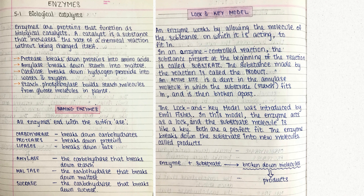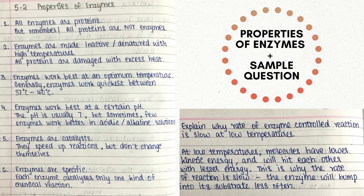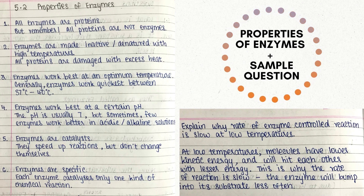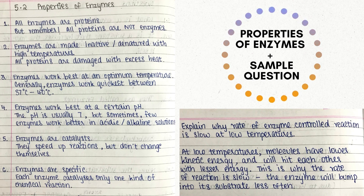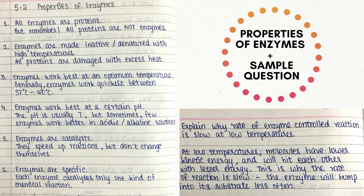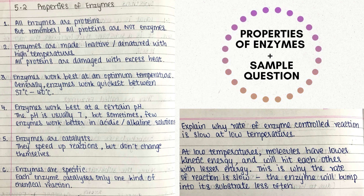Enzymes are proteins that act as biological catalysts in all metabolic reactions. A catalyst is a substance which increases the rate of reaction without being changed or used up in the reaction. For example, the protease enzyme breaks down proteins to amino acids, amylase enzyme breaks down starch to maltose, and catalase enzyme breaks down hydrogen peroxide into water and oxygen. Enzymes can also be used to build up molecules — for example, starch phosphorylase builds starch molecules from glucose molecules in plants.